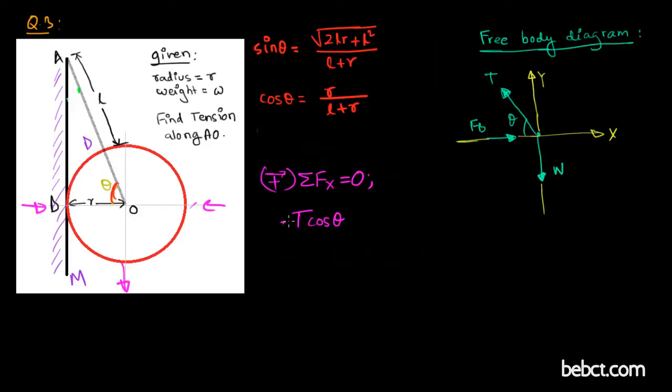Sum of forces along x-axis should be zero. The tension cos theta is going to be negative and F_B is going to be positive, so F_B is equal to T cos theta. Let's say this is relation 1.